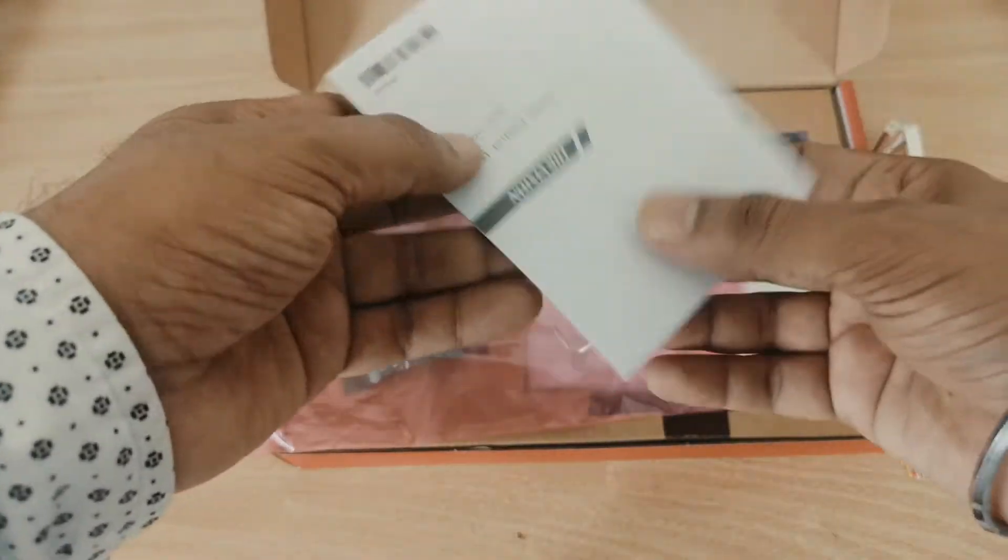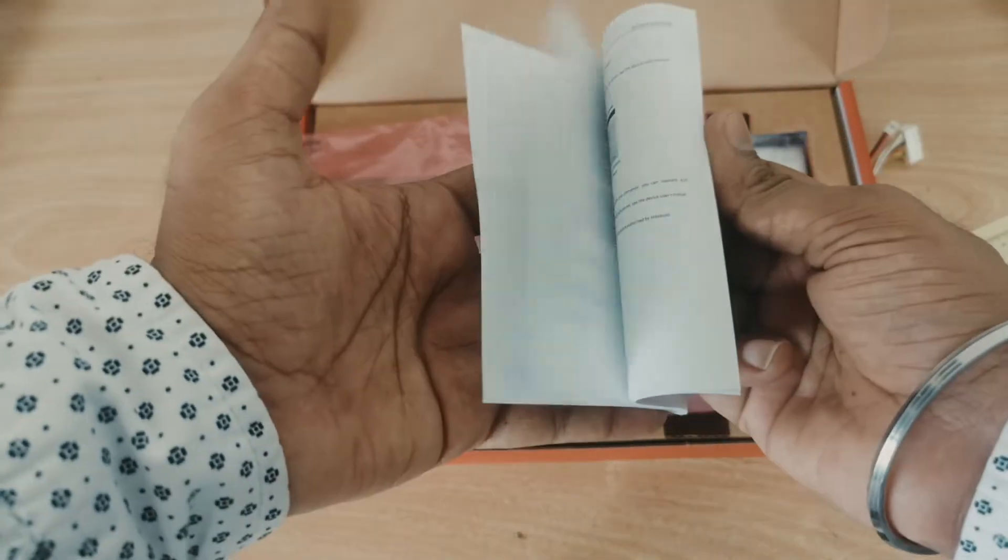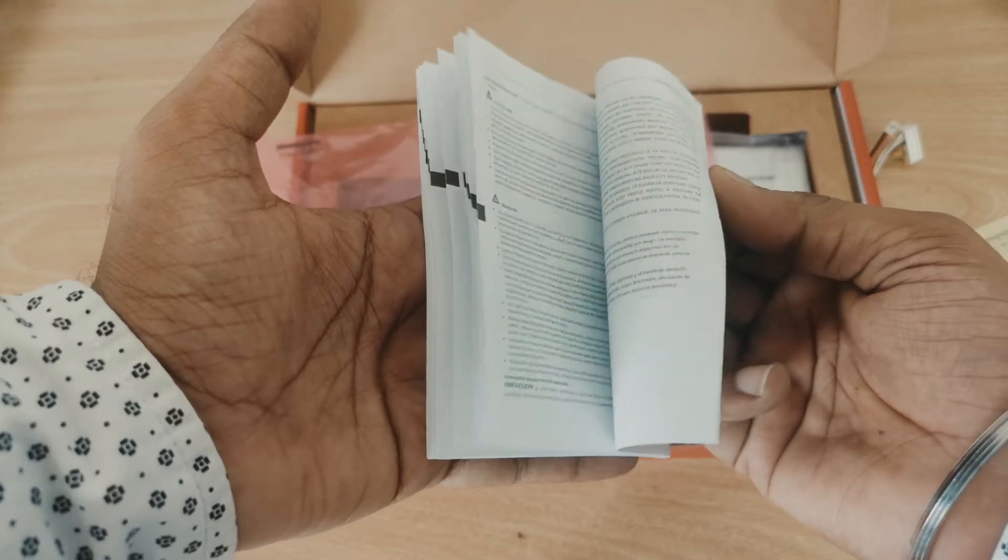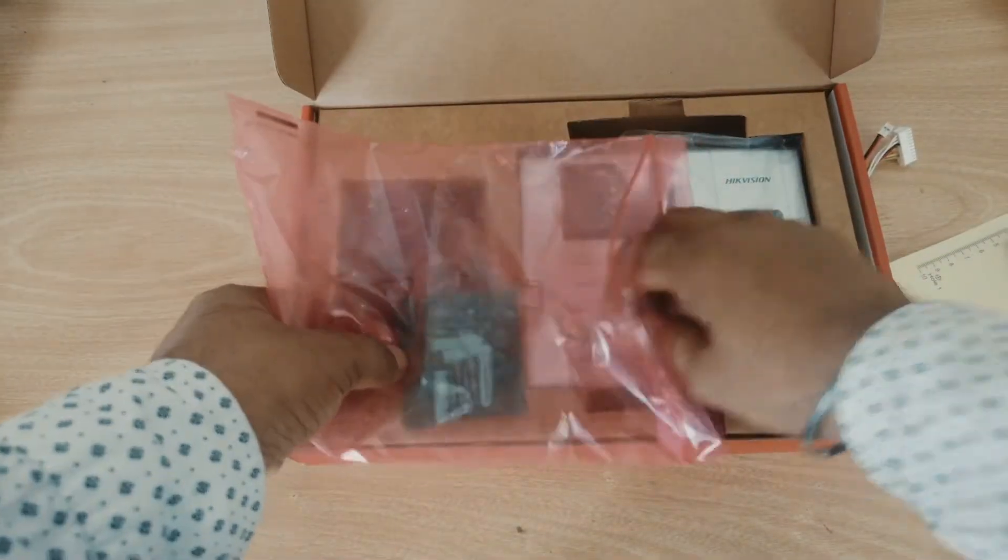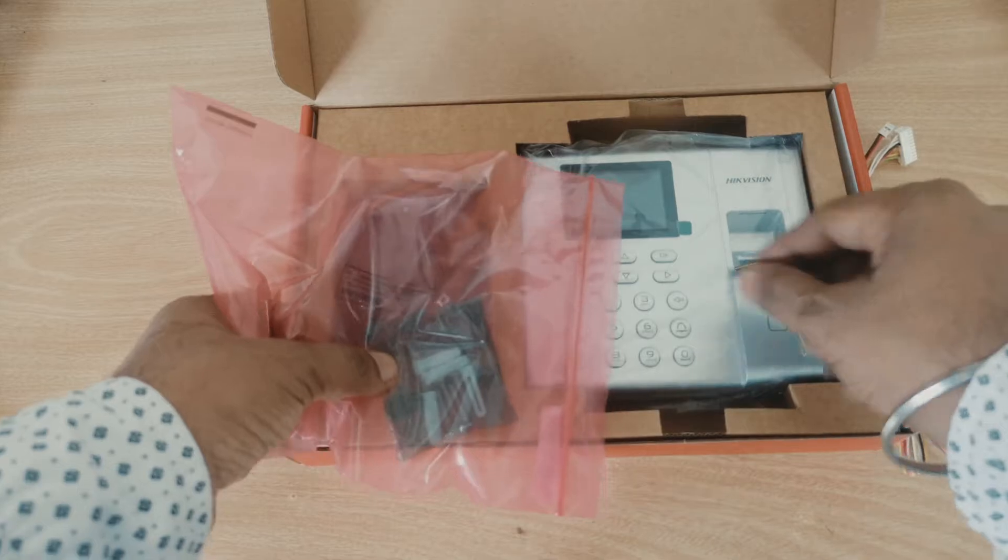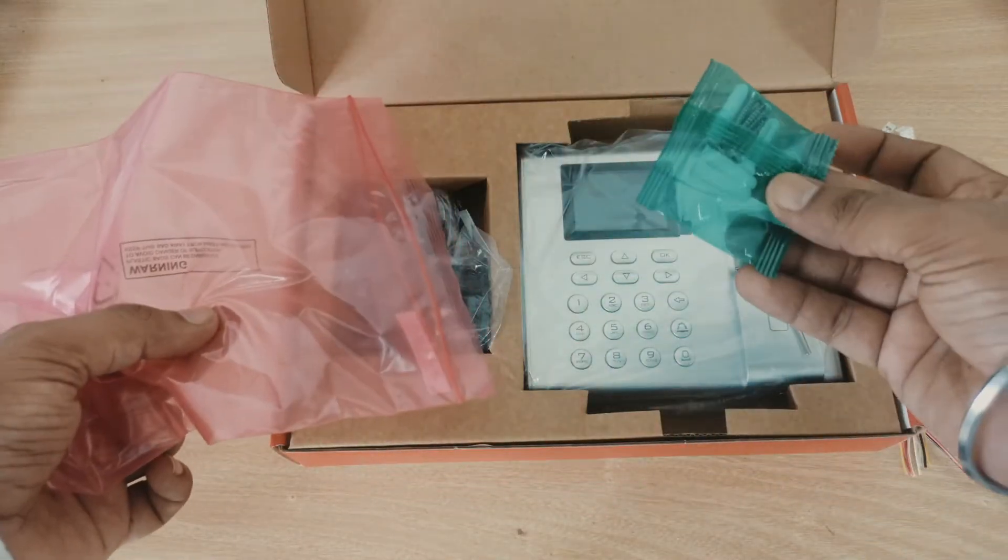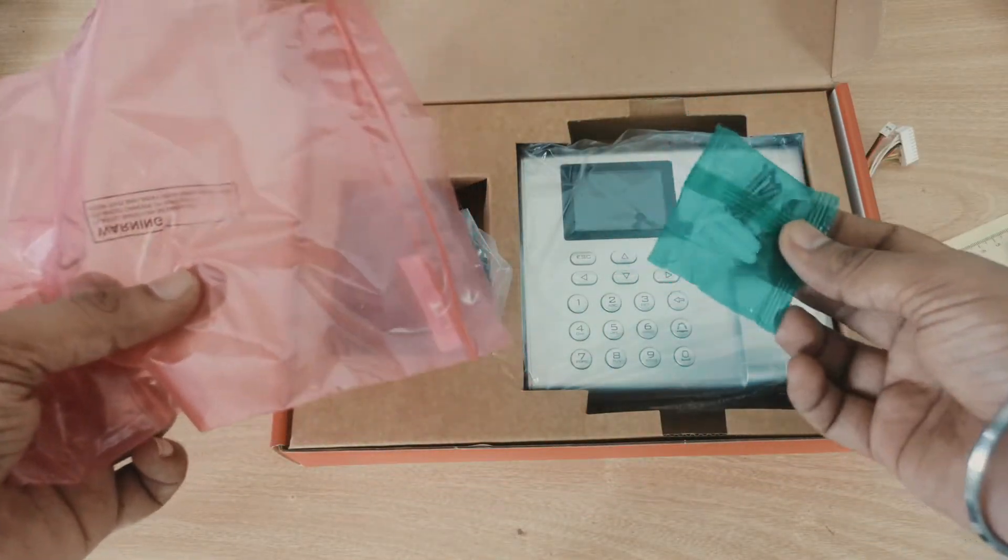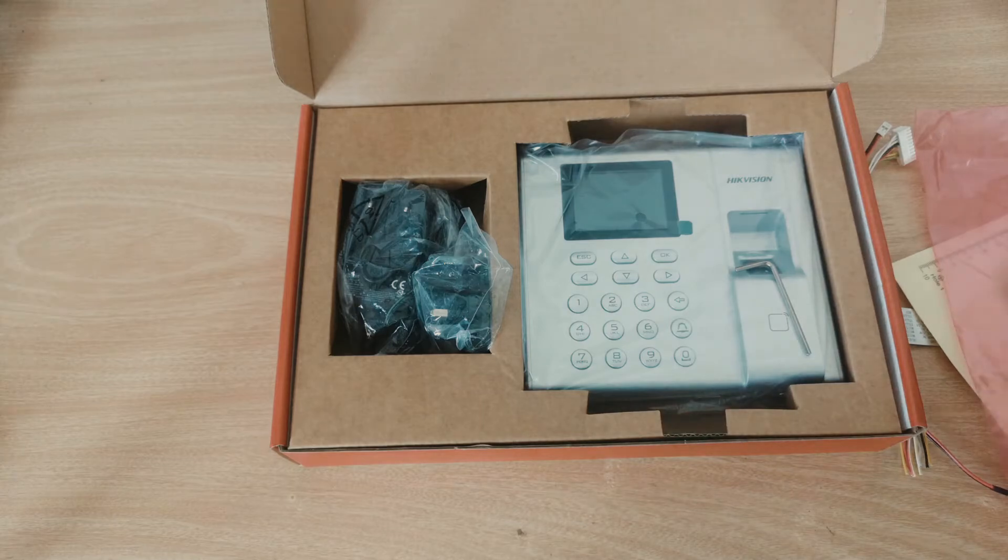Here is the user guide. We have an Allen key for the screws, and here are the screws for the metal plate. Let's put everything on the side.